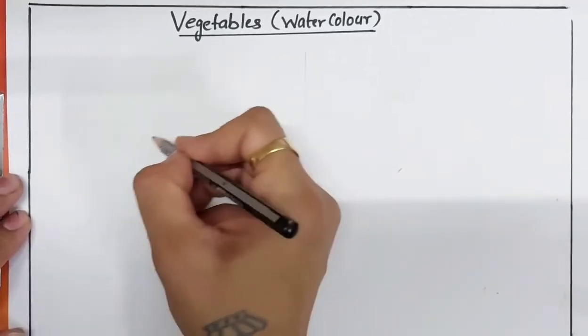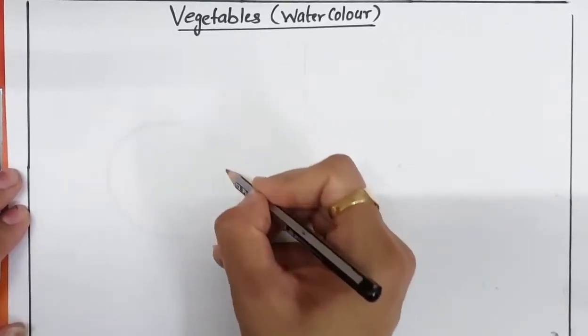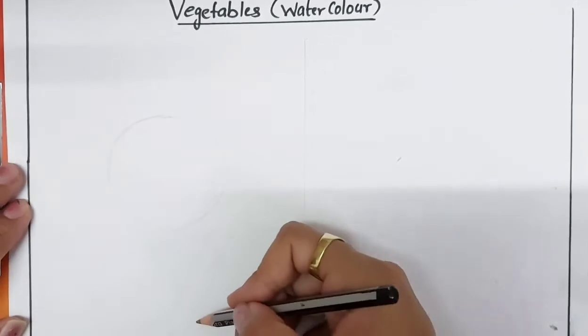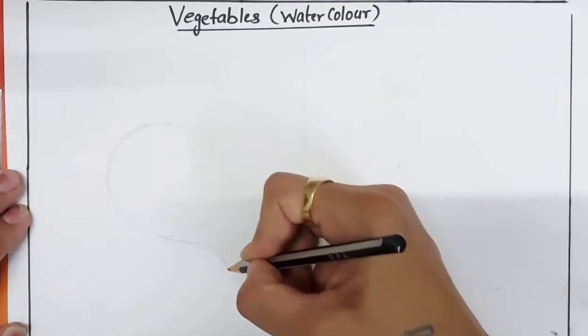First, you draw a circle for the turnip like this. Draw two curve lines, long pointed curve lines for the turnip's lower part.